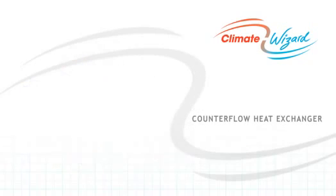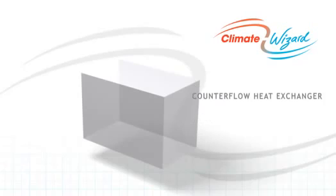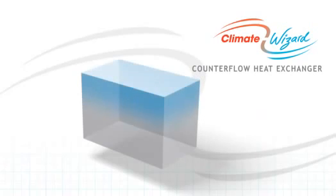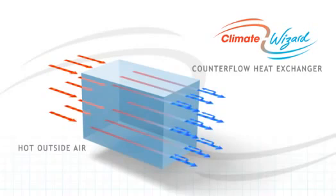The counter flow heat exchanger or the core of Climate Wizard is the exciting new technology that makes Climate Wizard so different. Water flows through the counter flow heat exchanger and saturates the core material. Hot air is drawn into the system and passes through the counter flow heat exchanger where it is cooled.